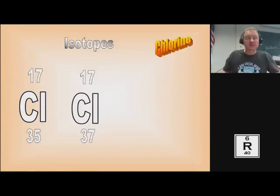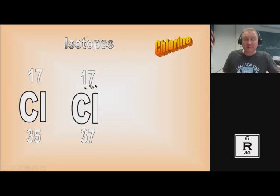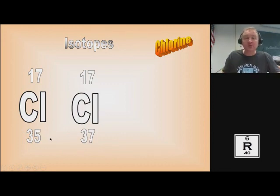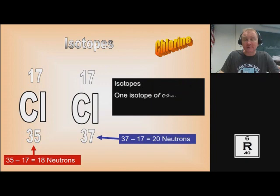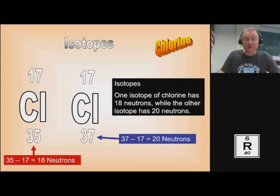The next concept was isotopes. Here's an example: I have chlorine-35 and chlorine-37. Both have 17 protons and also 17 electrons, but they have different atomic masses. Since they have the same number of protons but different atomic masses, that means they have a different amount of neutrons. Chlorine-35 has 18 neutrons (35 minus 17), and chlorine-37 has 20 neutrons (37 minus 17). Chlorine-35 and chlorine-37 are isotopes because they have a different amount of neutrons but are the same element.